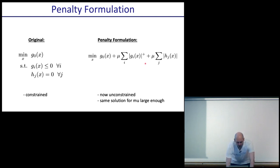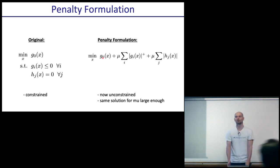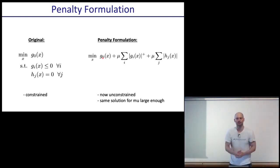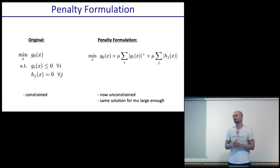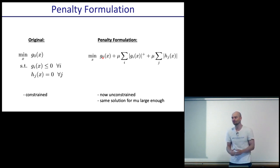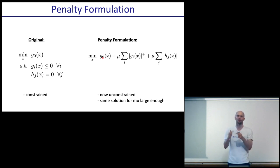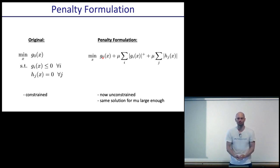There's a trade-off between the constraint terms and the original objective. If mu is a small value, you might find an x that doesn't satisfy the constraints, because it can do better on the objective by violating them. In an outer loop, you crank mu higher and higher until the constraints are satisfied, or you find there's no local optimum from where you started where the constraints are satisfied.